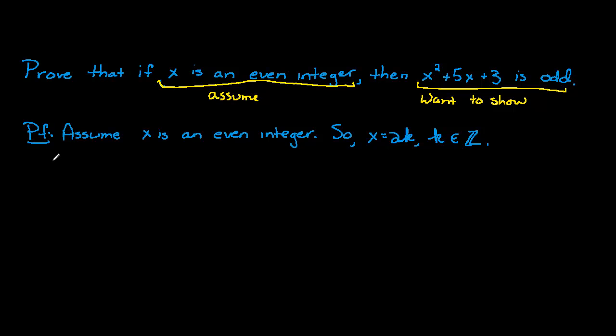Well, that means that we have x squared plus 5x plus 3 equal to—now, just substitute in what we know x is. x is some even integer, so it's of the form 2k. So let's substitute that in: 2k squared plus 5 times 2k plus 3.